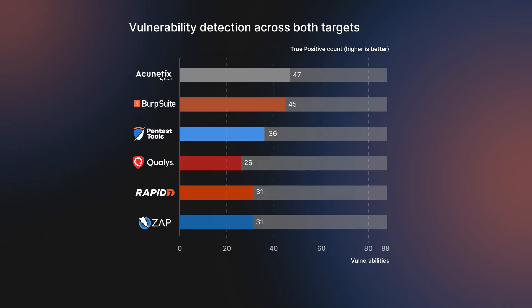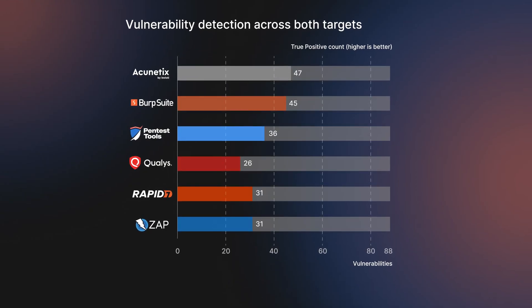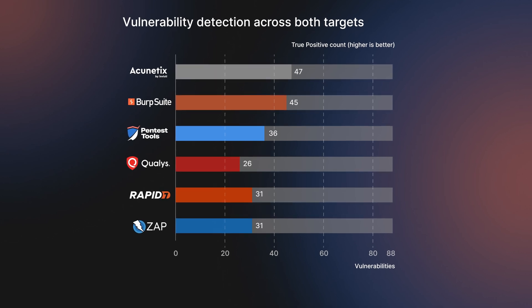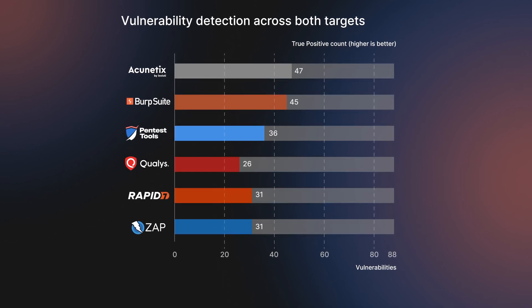When interpreting this performance data, it's crucial to acknowledge that exemplary results in benchmark testing don't always translate directly to real-world scenarios. Similar features differ in implementation across web applications frequently, which results in edge cases and complex flows. These nuances, which no benchmark can fully cover, can affect the performance of scanners when deployed in actual environments.